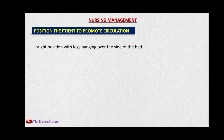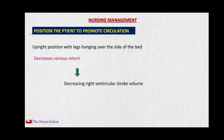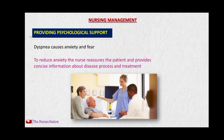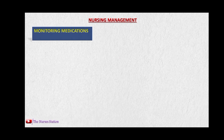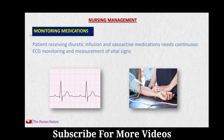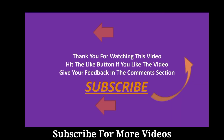For nursing management, position the patient to promote circulation — usually with legs hanging over the side of the bed. This decreases venous return to the heart, reduces ventricular stroke volume, and decreases lung congestion. Provide psychological support, as patients with dyspnea experience anxiety and fear; the nurse should reassure the patient and provide information about the disease process. Monitor medications closely, since diuretics increase urine volume and the patient must be observed for complications from excessive fluid loss. Patients receiving diuretics and vasoactive medications need continuous ECG monitoring and measurement of vital signs.